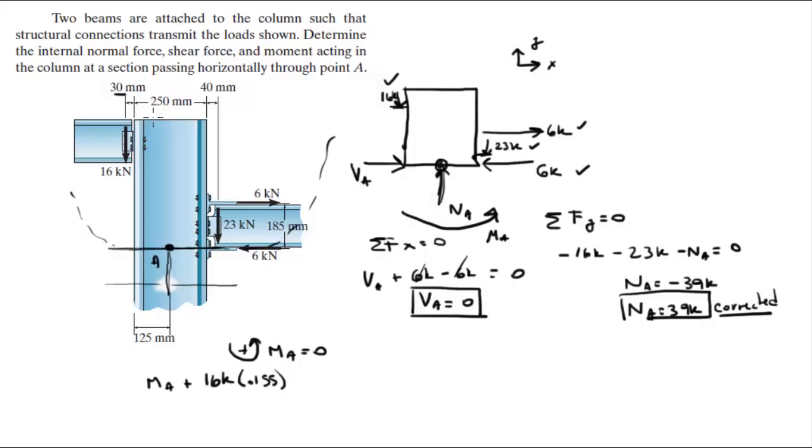The distance from here to here is 155 millimeters, converted to meters is 0.155. Minus the 23k times the distance from here to here, which is 125 plus 40, so 23k times 0.165 meters.